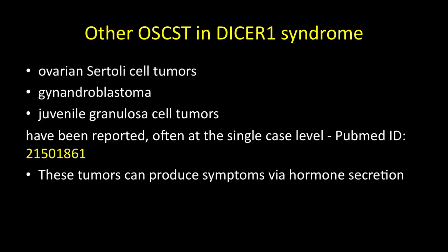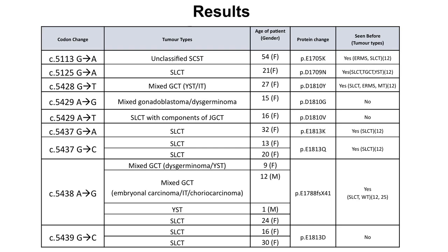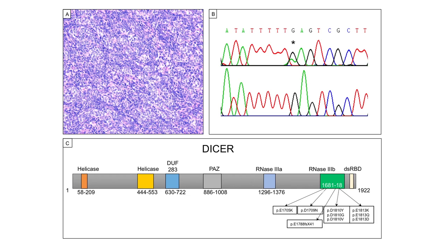When we looked in an unbiased way at as many ovarian and testicular gonadal tumors as we could find, we found that really only the Sertoli-Leydig cell tumors had frequent somatic mutations. There was nothing else in the sex cord stromal tumors. If you have an unclassified sex cord stromal tumor, you should do DISA analysis — if you find a mutation, it's probably an SLCT, not an adult granulosa cell tumor. We found a few somatic mutations in germ cell and testicular tumors, though we've never seen germline mutations in people with germ cell tumors.